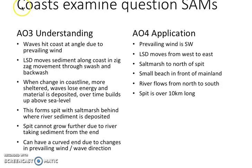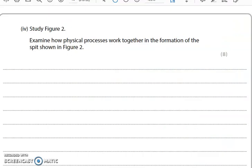To sum up, this is the information you would need to include in your answer: the geographical understanding of spit formation — transportation, deposition, and how processes work together — combined with the evidence gained from the resource. The question asks you to examine the physical processes using connectives such as 'this means that,' 'this leads to,' 'this causes.' It is worth eight marks and you will have approximately ten minutes. Have a go now before we go through the answers.